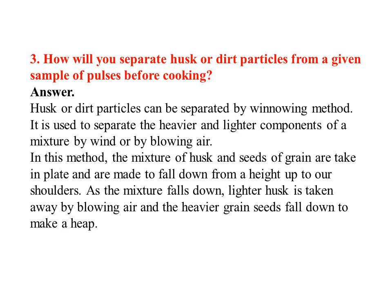How will you separate husk or dirt particles from a given sample of pulses before cooking? Husk or dust particles can be separated by the winnowing method. In this method, the mixture of husk and seeds of grains is taken in a plate and made to fall down from shoulder height. As the mixture falls, lighter husk is carried away by blowing air and the heavier grain seeds fall down to make a heap.